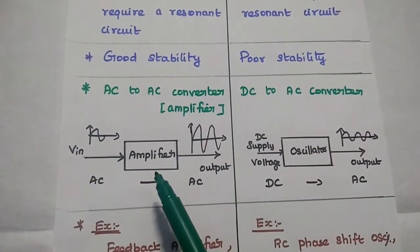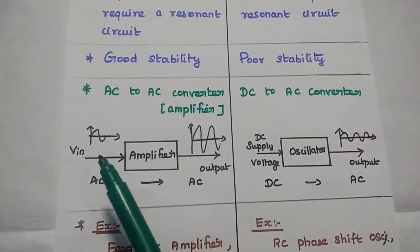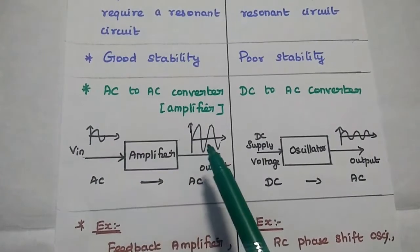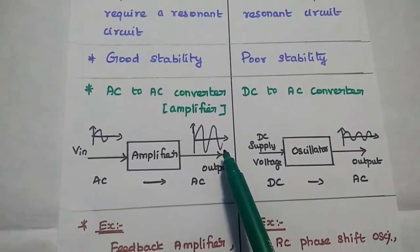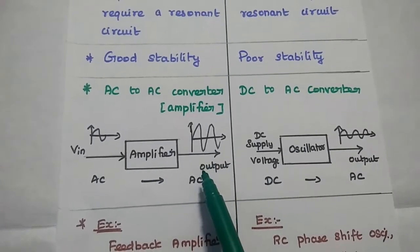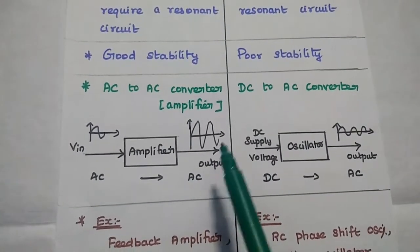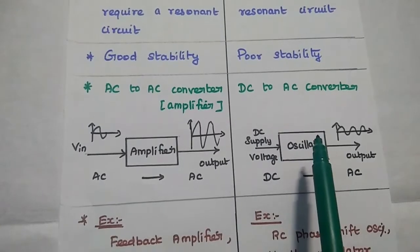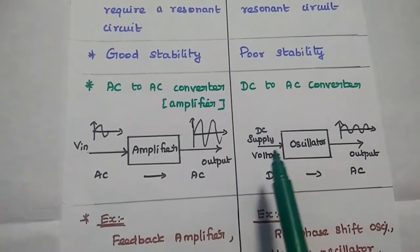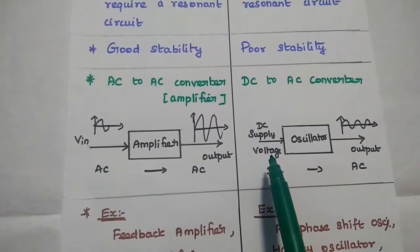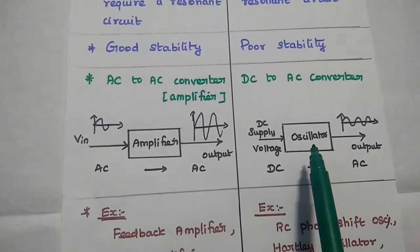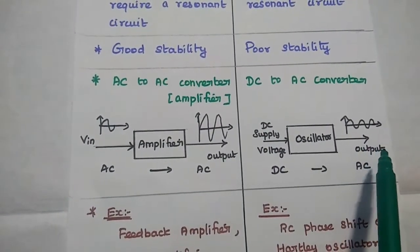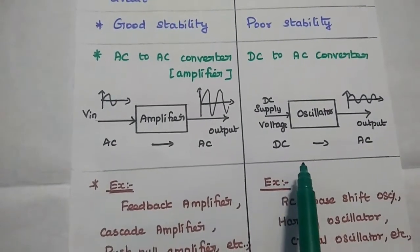An amplifier can be used as an AC-to-AC converter. In this diagram, we can clearly understand the concept. For this amplifier, we can give an AC input signal with small amplitude value; it can be amplified at the output side, so the output is also an AC signal but with increased amplitude. The oscillator can be used as a DC-to-AC converter. We give only the DC supply voltage required for the transistor used in this oscillator, and it produces an AC output signal.